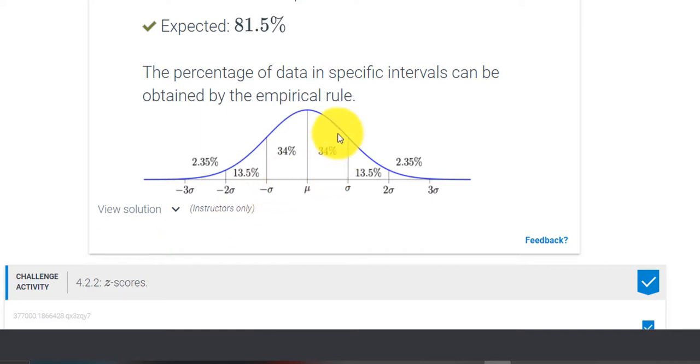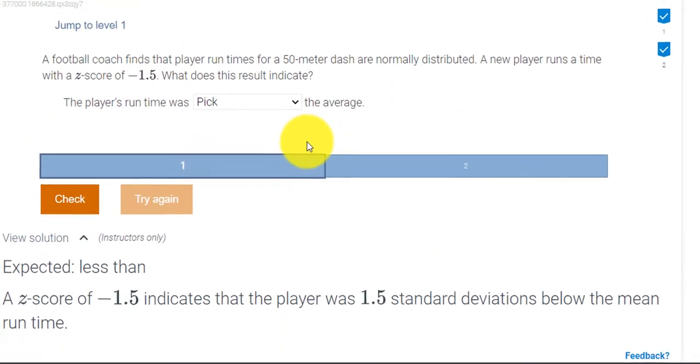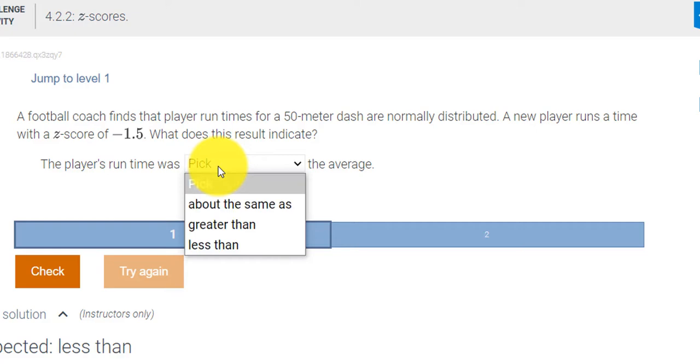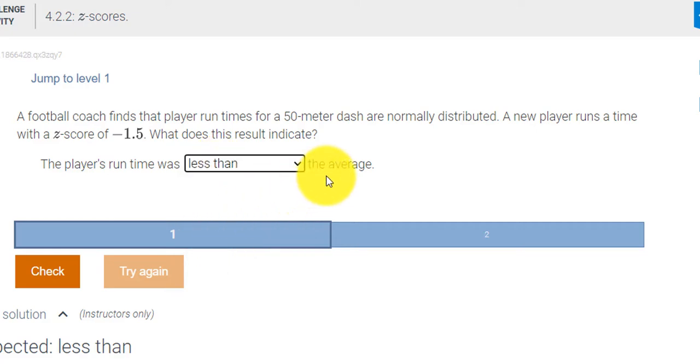I think we have time for one more. Let's look at the next problem. A football coach finds that a player runs times for a 50-meter dash that are normally distributed. A new player runs a time with a Z score of negative 1.5. What does this result indicate? So the player's run time was less than the average because of the negative. It's one and a half standard deviations to the left of the average.